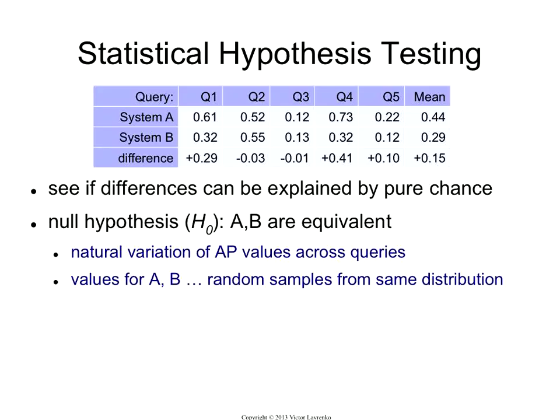Now, each system has a natural variation of scores, average precision, or whatever measure you pick over the queries. And that's just because some queries are harder, some queries are easier. For example, Q1 looks like an easy query, and Q3 looks like a really hard query. So there will be some natural variation in these numbers. So you could think about these numbers as being drawn from some distribution, from some statistical distribution. So the null hypothesis corresponds to the assumption that the numbers for A, this row, and the numbers for B were really drawn from the same distribution of numbers.